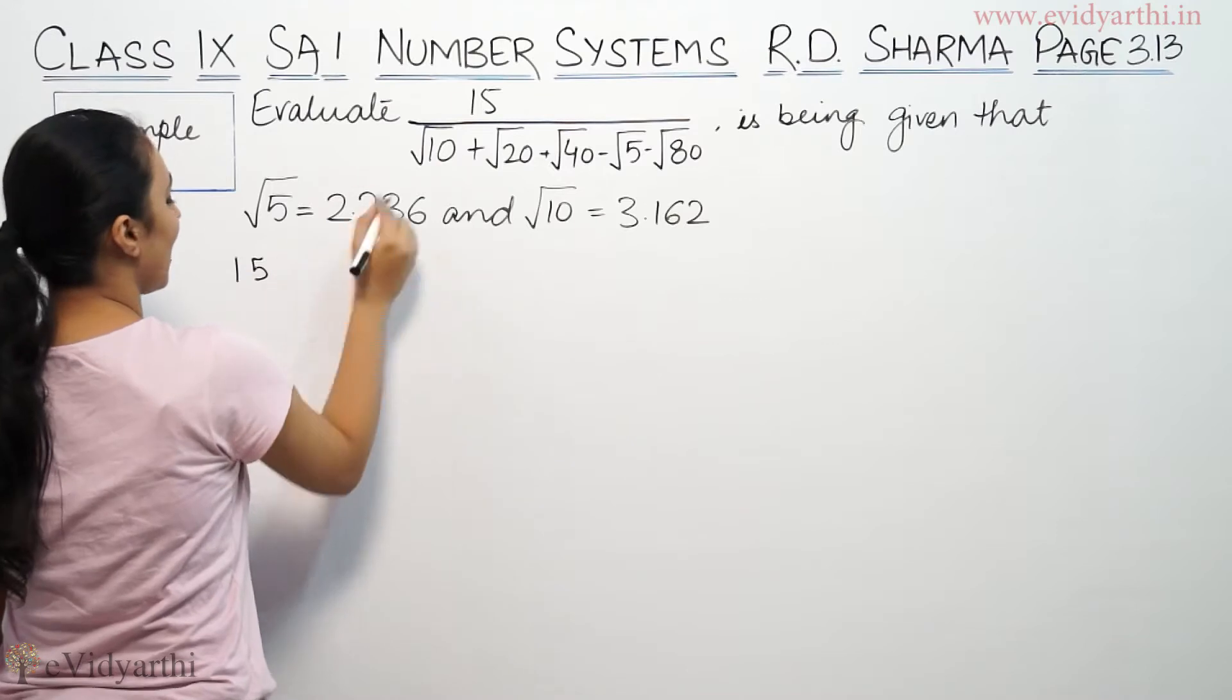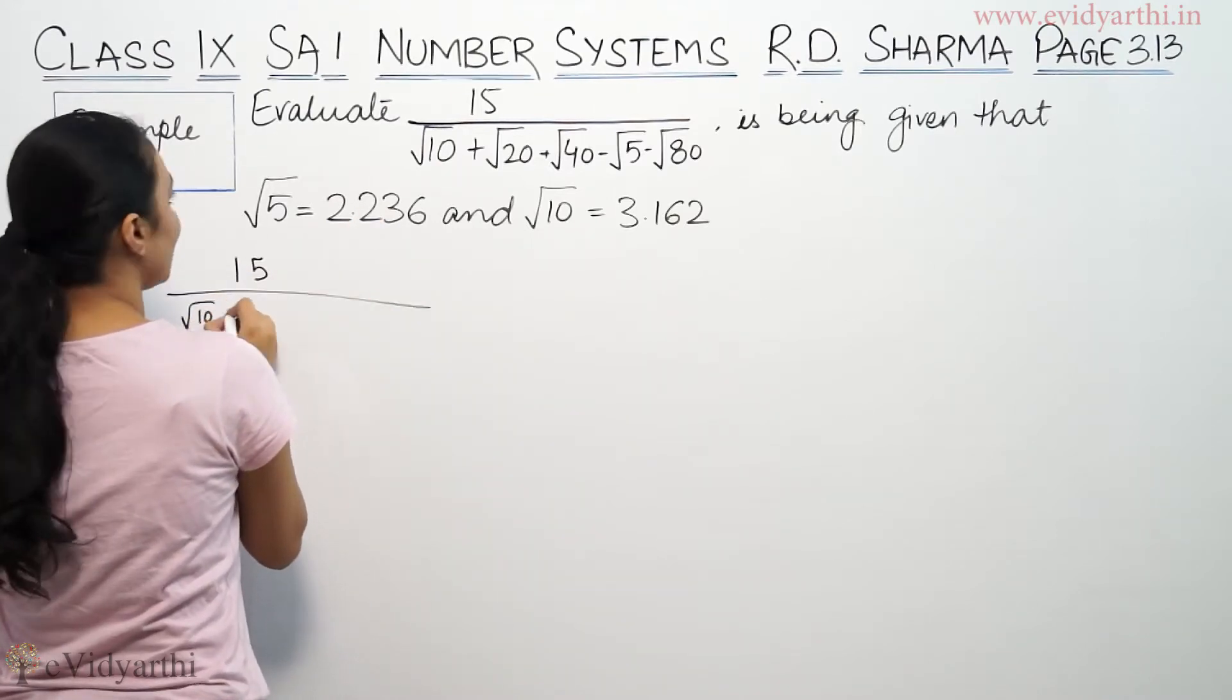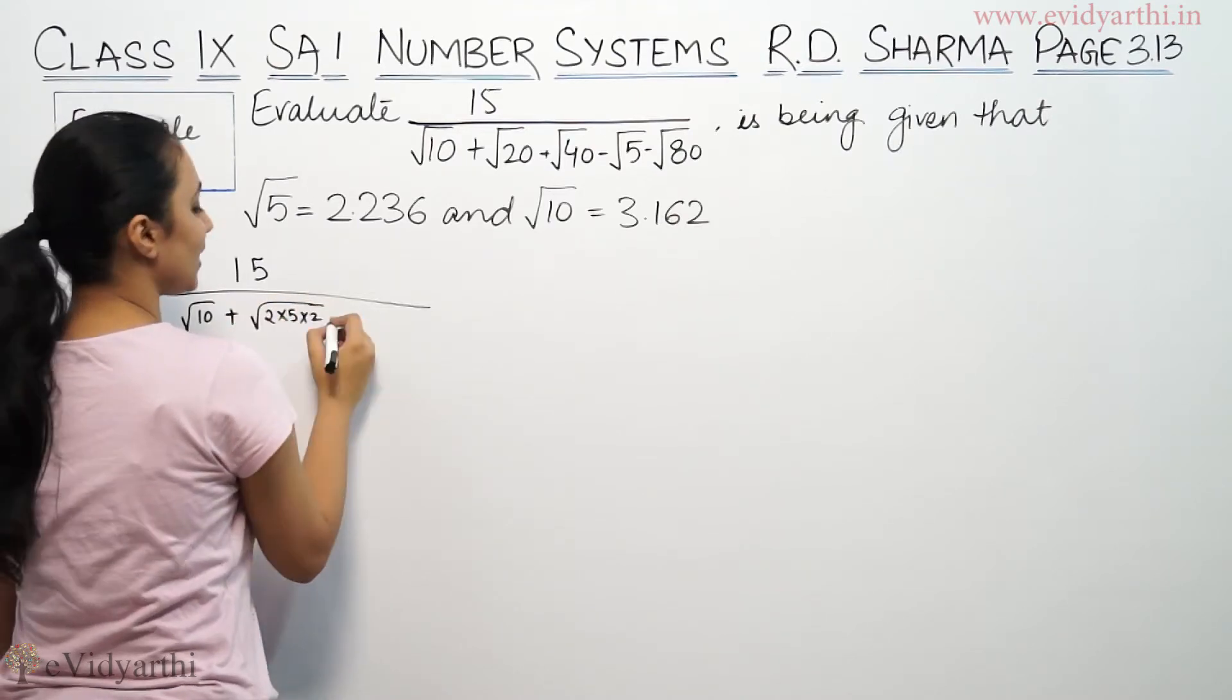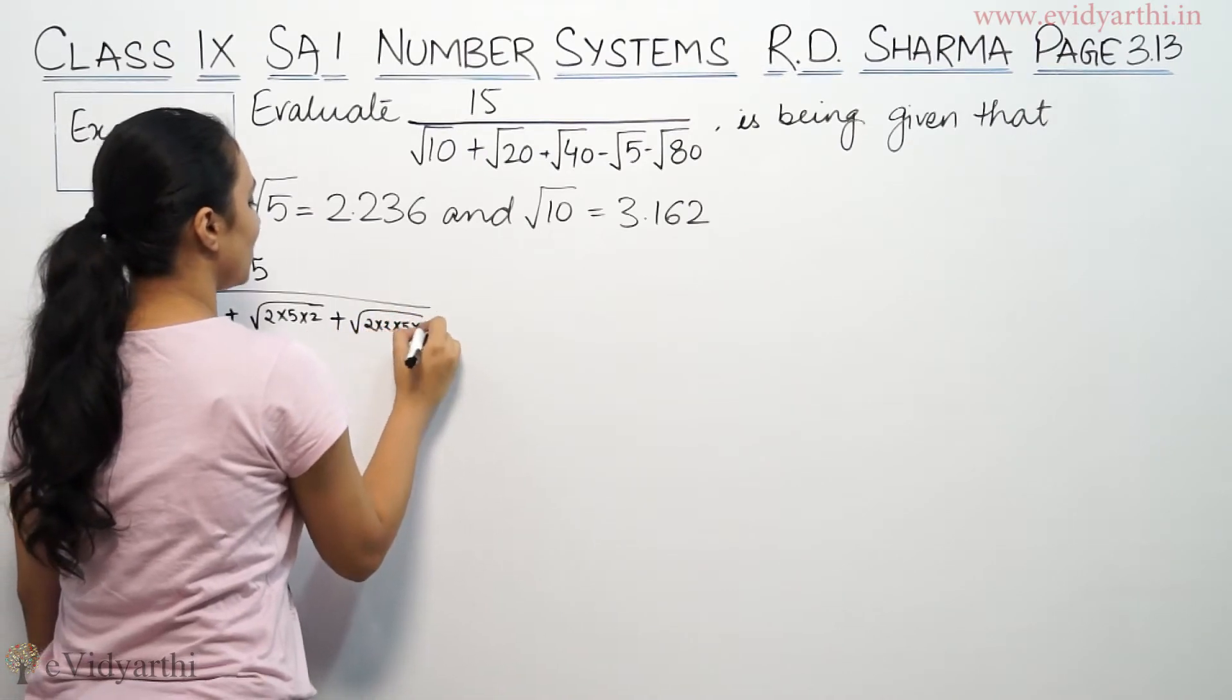So let's look at 15 upon root 10, plus root 20 which we can write as 2 times 5 is 10, times 2 is 20. Root 40 is 2 times 2 is 4, times 5 is 20, times 2 is 40.